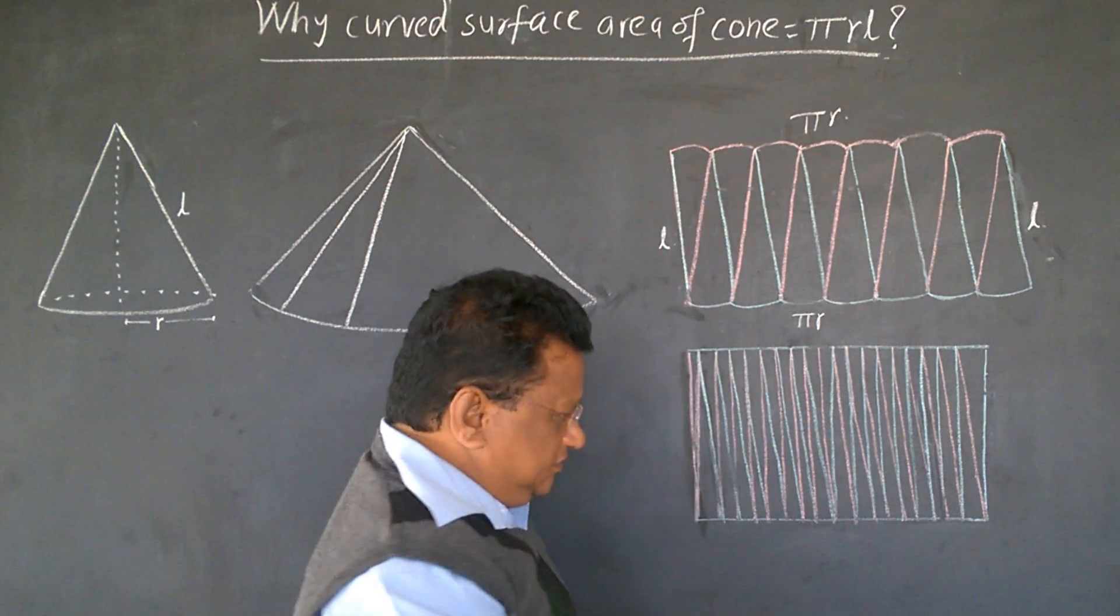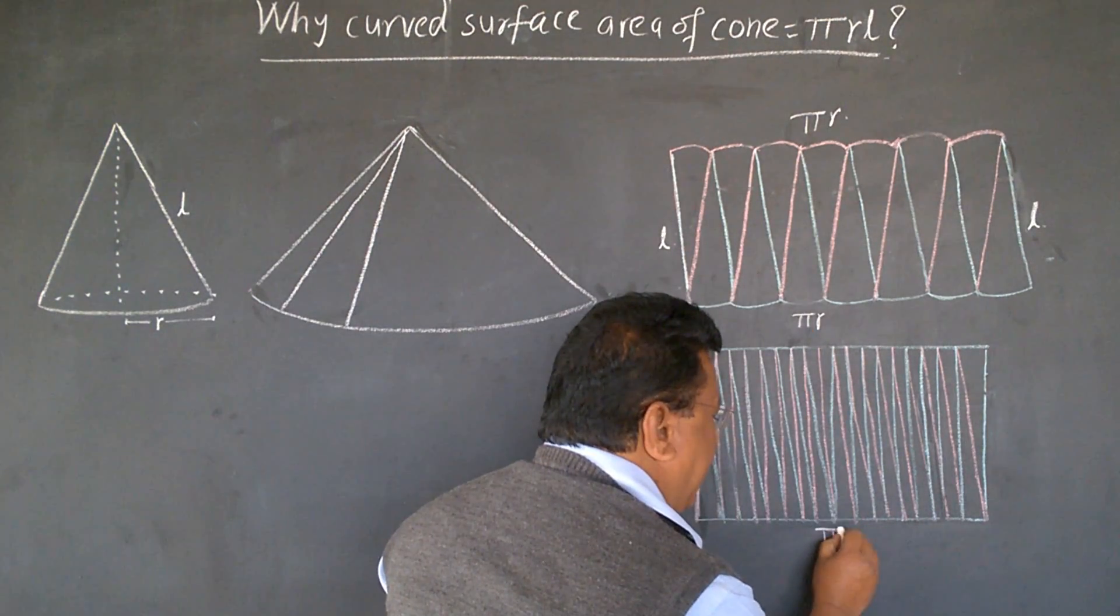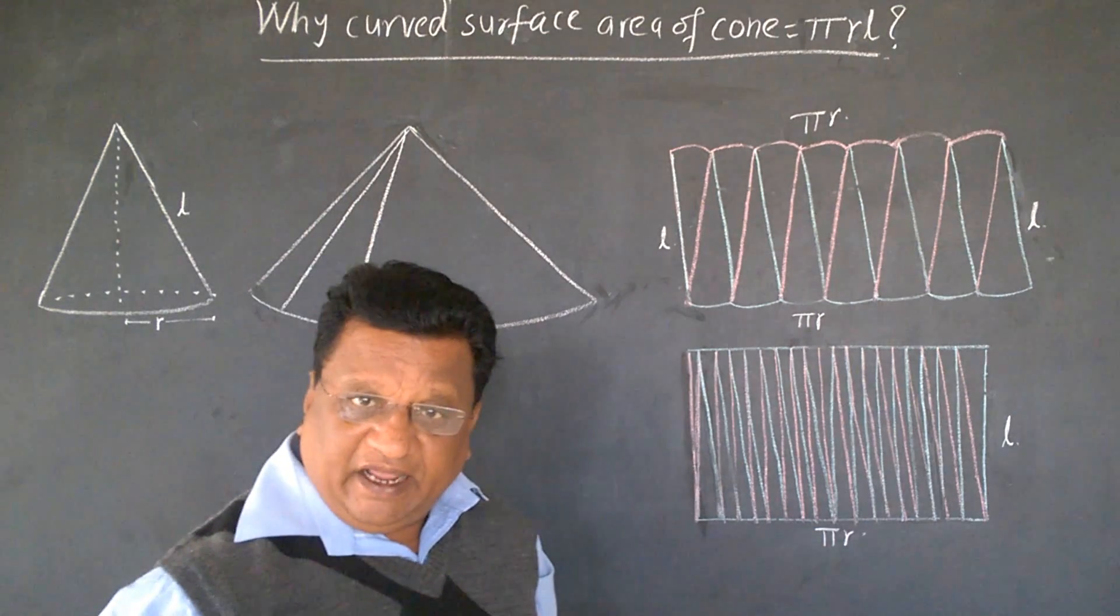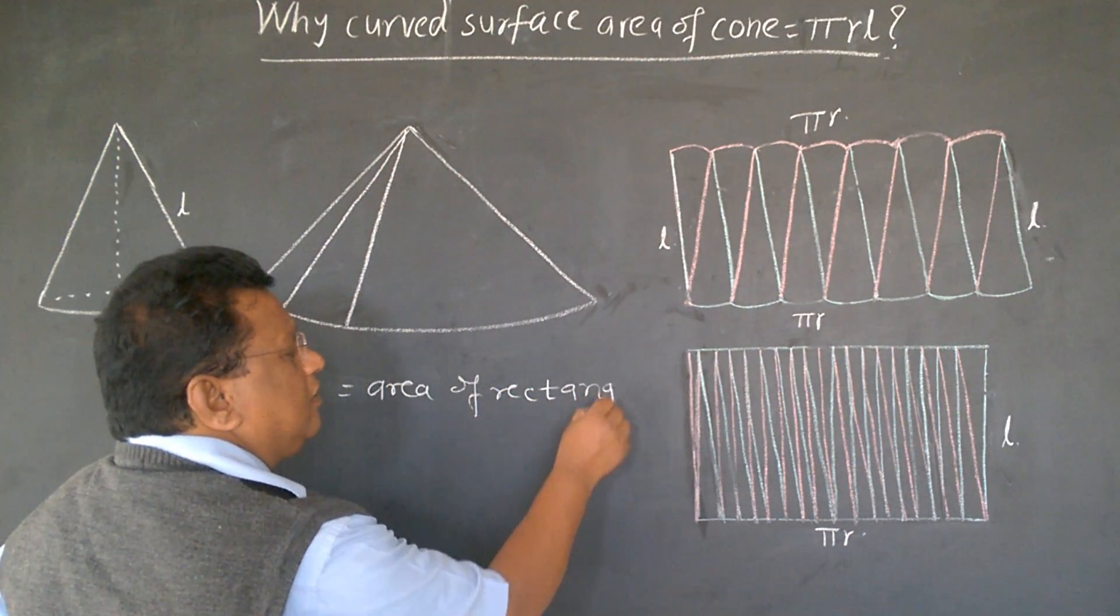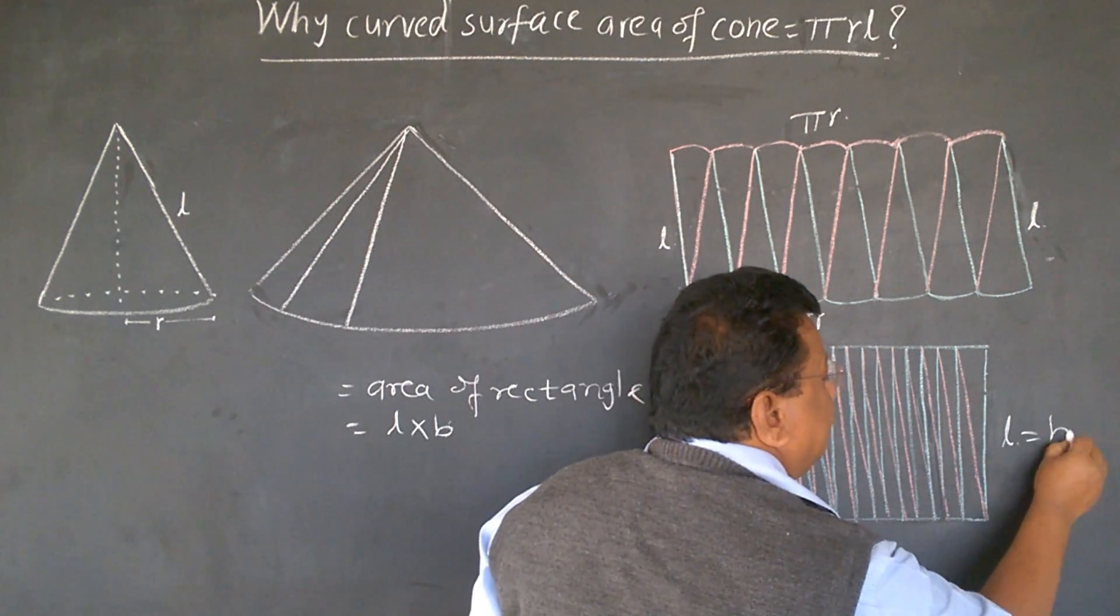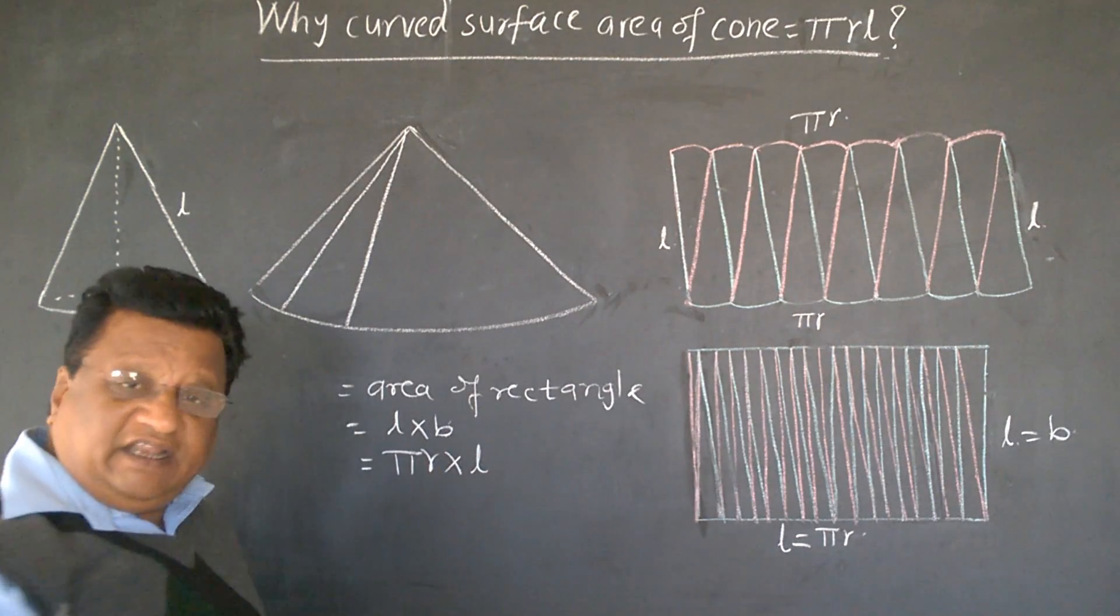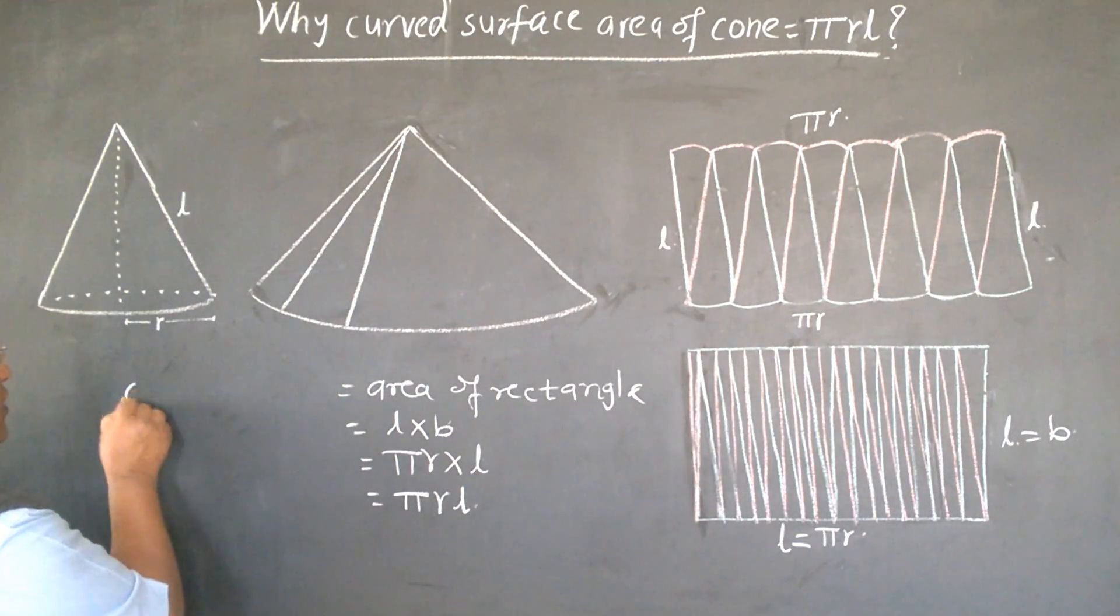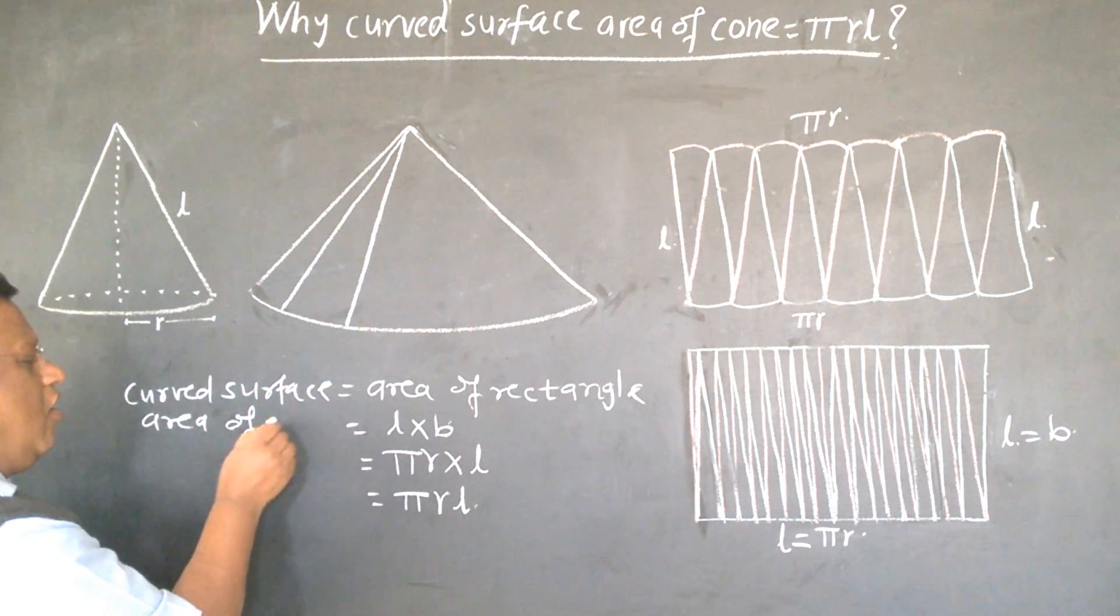If we further divide it, it will look like this. This is nothing but rectangle. So, this part is pi r. This is l. But, we know, how to find the area of rectangle. So, area of rectangle is length into breadth. This is the length of the rectangle, and this is the breadth of rectangle. So, length pi r into slant height l. So, this is pi r l, and this is the formula to find curved surface area of cone.